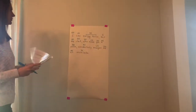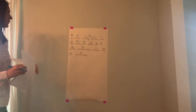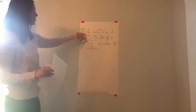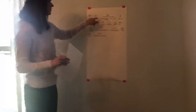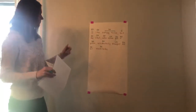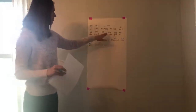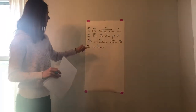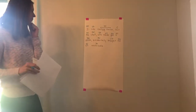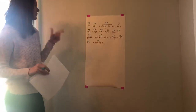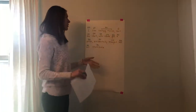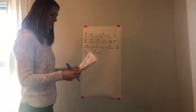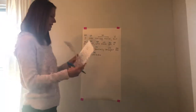What is our sentence pattern? First we have subject, verb transitive, direct object. Then we have subject, verb transitive, indirect object, direct object. And that pattern repeats again in the dependent clause. And what is the purpose? Declarative — it is declarative. Very good.